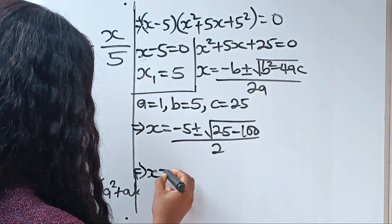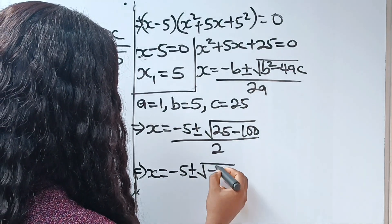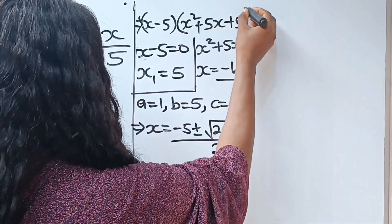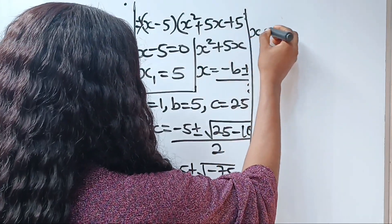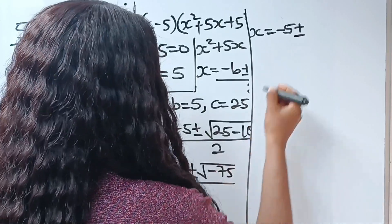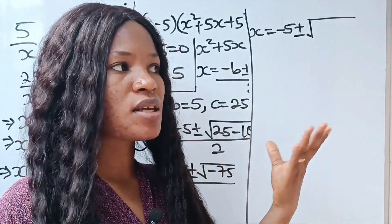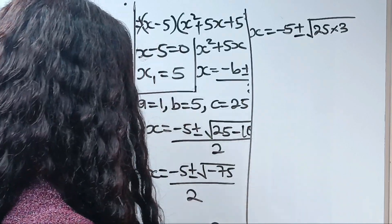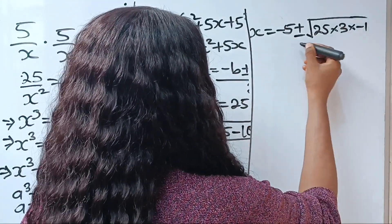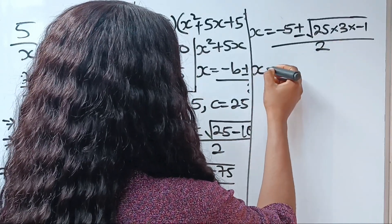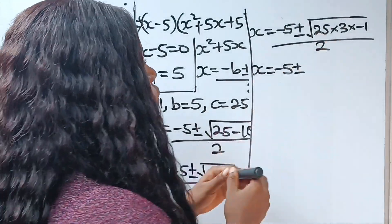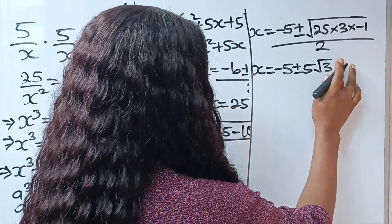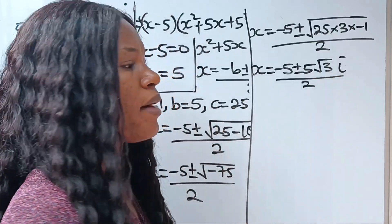So we have x is equal to minus 5 plus or minus the square root of minus 75, divided by 2. Now, minus 75 can be written as 25 multiplied by 3, multiplied by minus 1. So the square root of 25 gives us 5, then we have square root of 3, and the square root of minus 1 gives us i. Everything divided by 2.